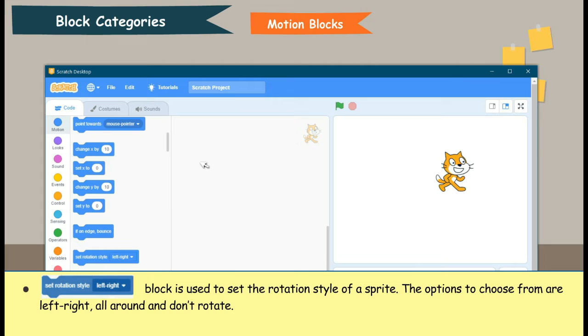Set Rotation Style Left Right Block is used to set the rotation style of a sprite. The options to choose from are left, right, all around, and don't rotate.